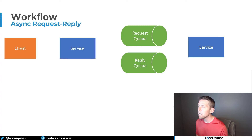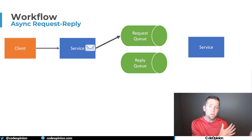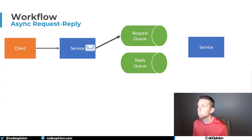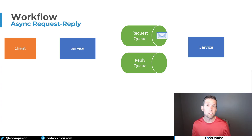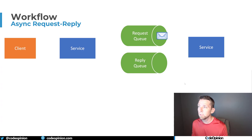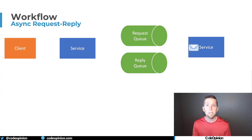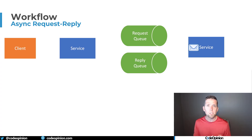What we're going to do is have our client send a request to our service, but our service, if it needs to interact with another service, is just going to send a message to a broker, which ultimately goes to a queue. The original client request is then done — we're non-blocking. The message sitting in the queue could be processed immediately if the other service is available, or it may take a few minutes. Eventually, the service that needs to process that request will pick it up and carry out its part of the workflow.